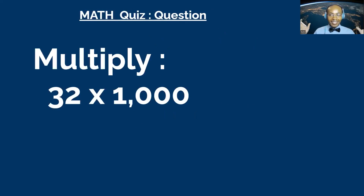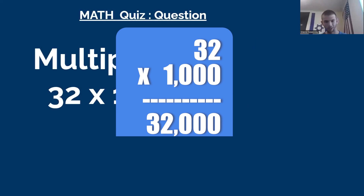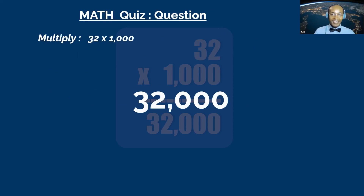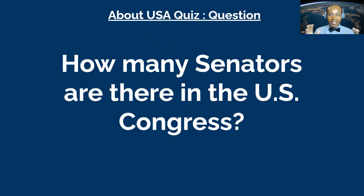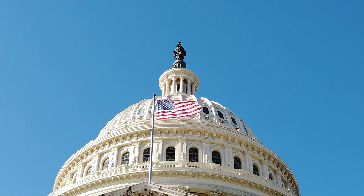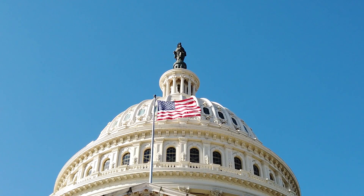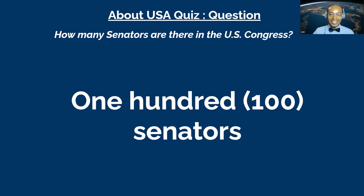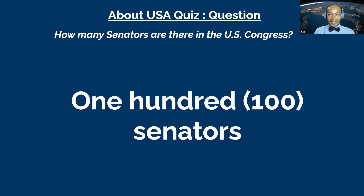Next question goes to David: multiply 32 times 1,000. David answered 32,000 — correct! That's two dollars for David. This one is a bonus going to Isaiah: how many senators are there in the United States Congress? There are two senators per state, so 100. That's correct — 100 senators!